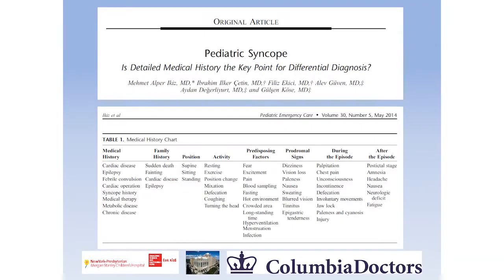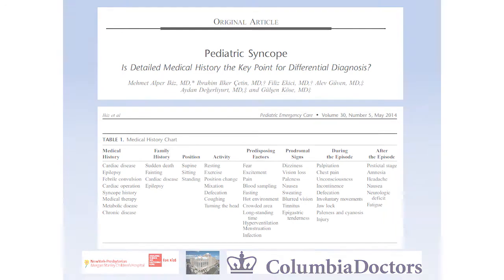Medical history is a very important part of differential diagnosis. We want to know about significant past medical procedures, family history of heart disease or fainting — syncope runs in families, as does breath holding — the position in which events happened, what activity was going on, and predisposing factors.